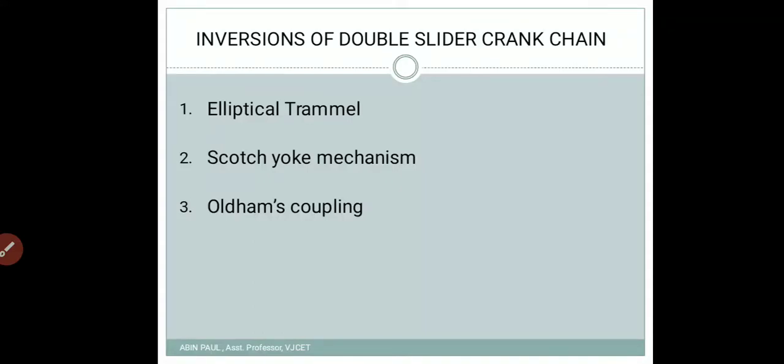Welcome. So far we have discussed about the inversions of kinematic chains. We have three different types of kinematic chain: four bar chain, single slider crank chain, and double slider crank chain. We have already discussed the inversions of four bar chain and single slider crank chain. In this video we will see the inversions of double slider crank chain. As the name indicates, there will be two sliders out of the four links.